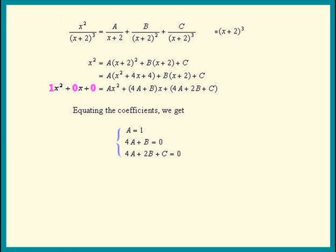So matching the coefficients up, we get a equals 1, 4a plus b is 0, and the constant terms, 4a plus 2b plus c equals 0.